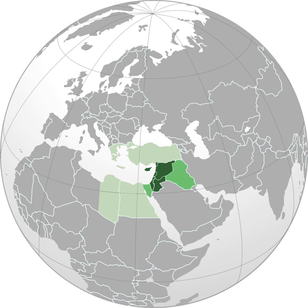Similar etymologies are found in Greek Anatole (cf. Anatolia), in Germanic Morgenland, as in "Riviera di Levante" — the portion of the Liguria coast east of Genoa — in Hungarian Kelet, in Spanish and Catalan Levante and Levant meaning "the place of rising", and in Hebrew and its Latin source oriens meaning "east", literally "rising", deriving from Latin orior, "rise".